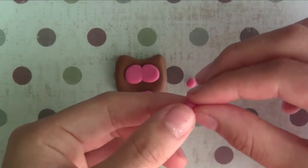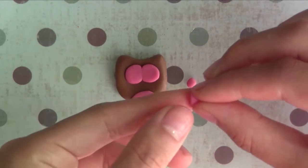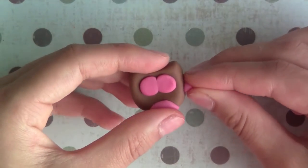Now I'm taking two more pieces of cold porcelain and I'm shaping them into triangles for the wings of the owl.